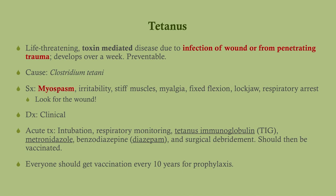Tetanus is also toxin mediated. You step on a rusty nail or get a wound contaminated with dirt — maybe in a car accident. This develops over about a week. It is very preventable because we give vaccines. The cause is Clostridium tetani. The symptoms of tetanus are myospasm, irritability, stiffness, and muscle pain, and eventually their muscles lock up. The cause of death is usually respiratory arrest. If you've got a patient with these signs, you've got to look for the wound.